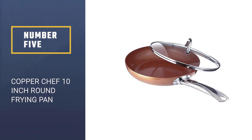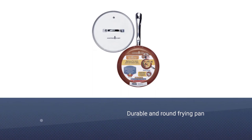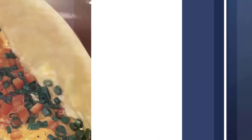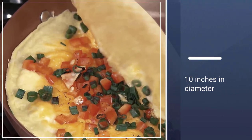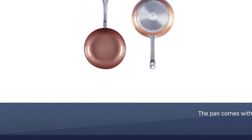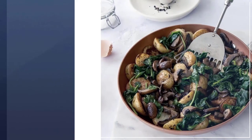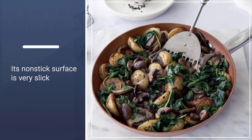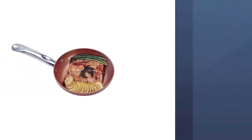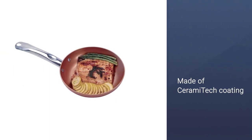Number five: Copper Chef 10 inch round frying pan. This durable and round frying pan will totally change how you saute meals in the kitchen. It is 10 inches in diameter, and this means you can rely on it to cook food for the entire family. In addition, the pan comes with a glass lid which is great for preserving the flavor of food while it is cooking. Its nonstick surface is very slick and therefore food will not stick. Since this frying pan is made of Cerami-Tech coating, expect it to be a healthy choice for everyday cooking.